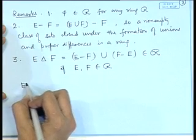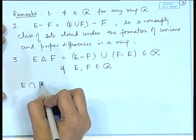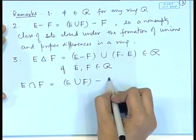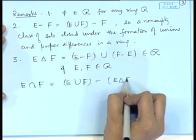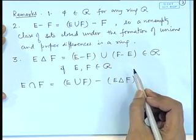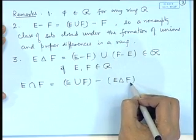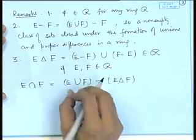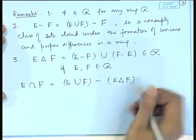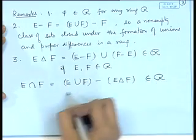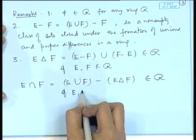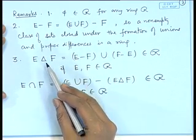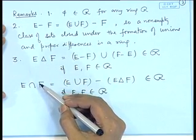Similarly, if I consider E intersection F, this can be represented as E union F minus E delta F. Since we proved that if E and F belong to R then E delta F also belongs to R, and E union F is already there, the difference is also in R. Therefore, E intersection F will also belong to R if E and F belong to R. That means a ring is also closed under the operation of symmetric differences and intersections.